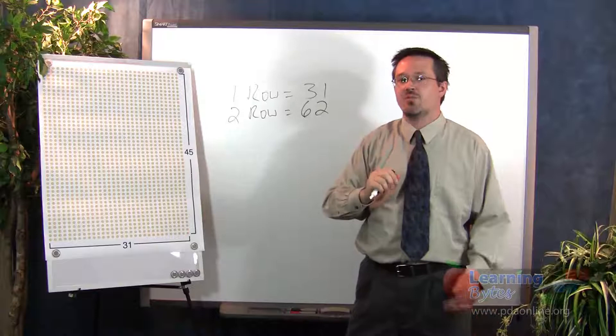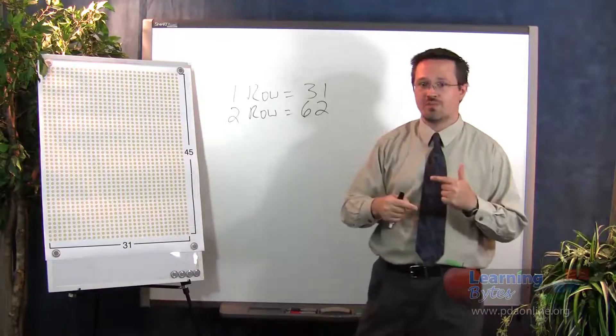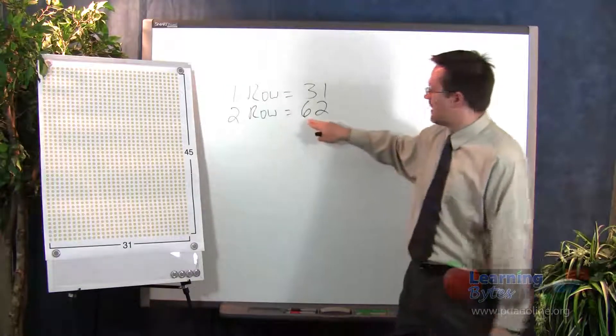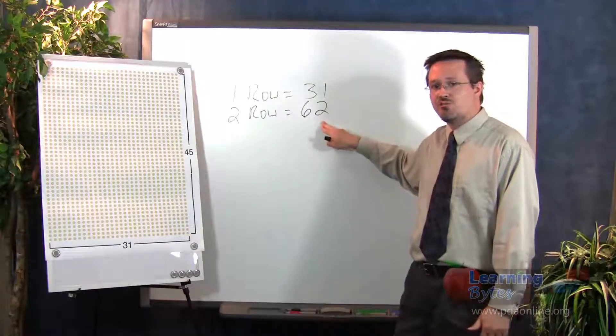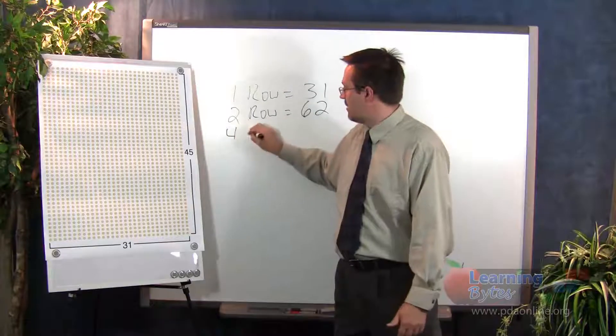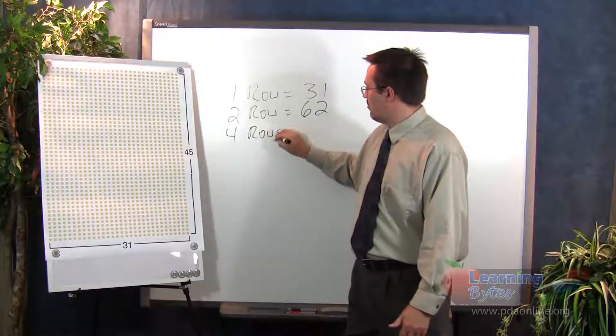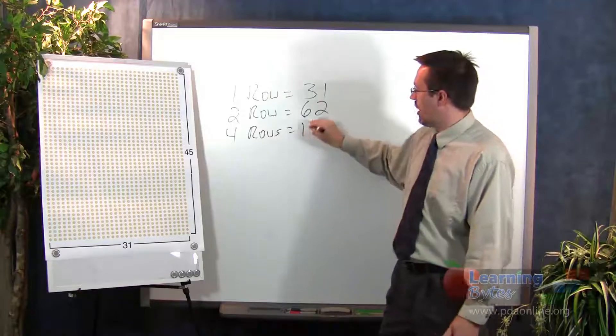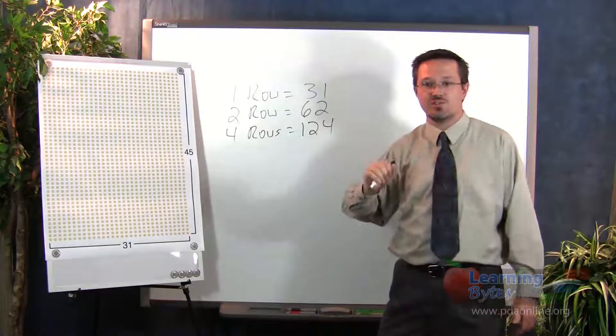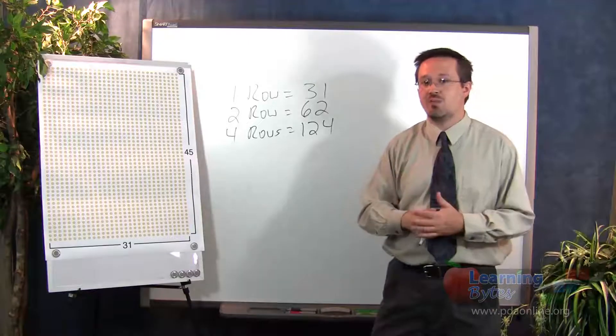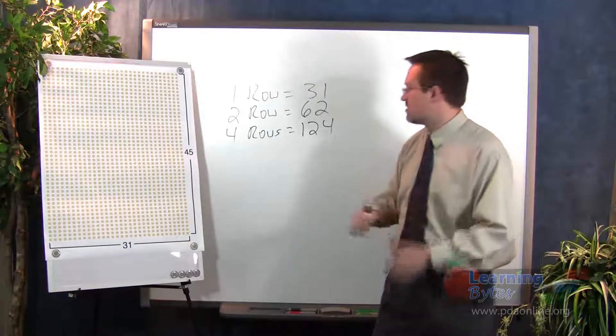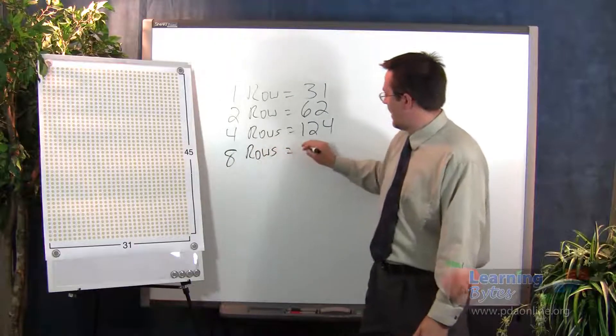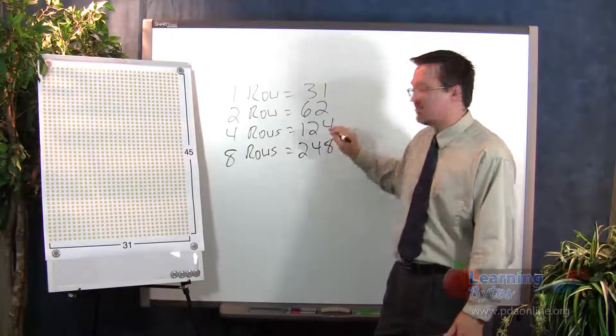Then you'll ask them, well, how many would be in four rows? At that point, they hopefully will realize that they can simply double the amount in two rows to tell you that in four rows, we would have 62 plus 62, or 124 students in four rows. Then ask them, how many would be in eight rows? And they'll start to sense the pattern. Eight rows has 248 students.